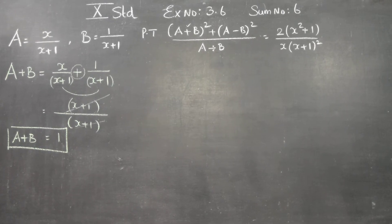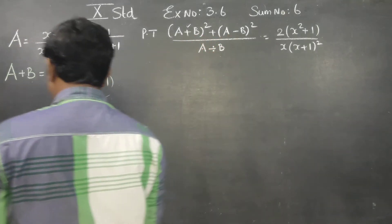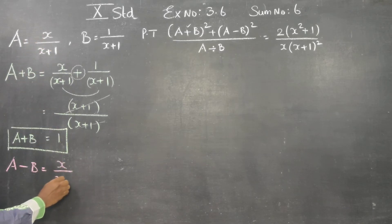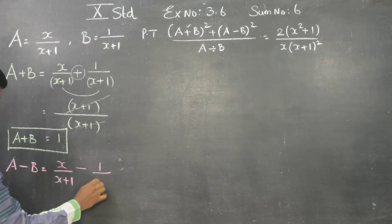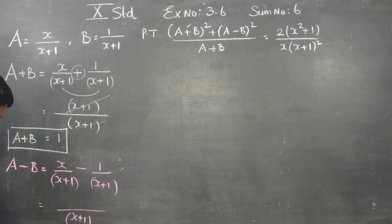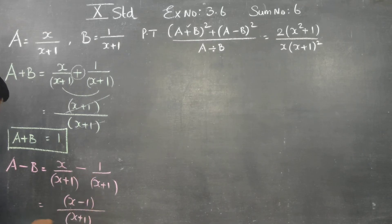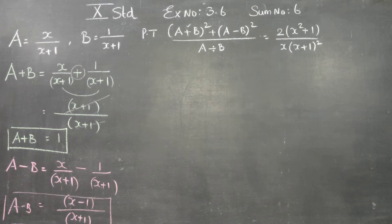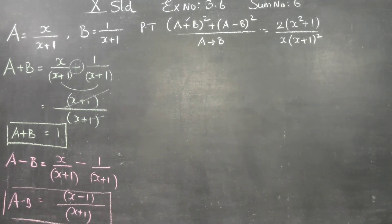Next, proceeding to a minus b. What is my a? x by x plus 1, minus what is my b? 1 by x plus 1. This gives us a minus b, which is x minus 1 into x plus 1.